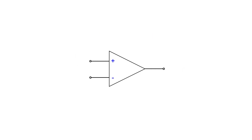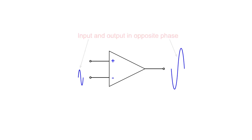Conversely, a signal applied to the inverting input will appear 180 degrees out of phase at the output. It is inverted, and any increase on the input will cause the output level to fall.